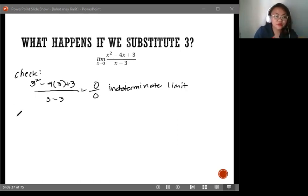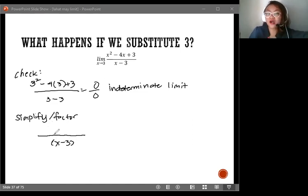Next, what we do is to simplify. We're to factor out. Simplify. We factor out. So, when you're simplifying limits, most often than not, most of the time, the denominator, x minus 3, is already one of the factors. x minus 3.